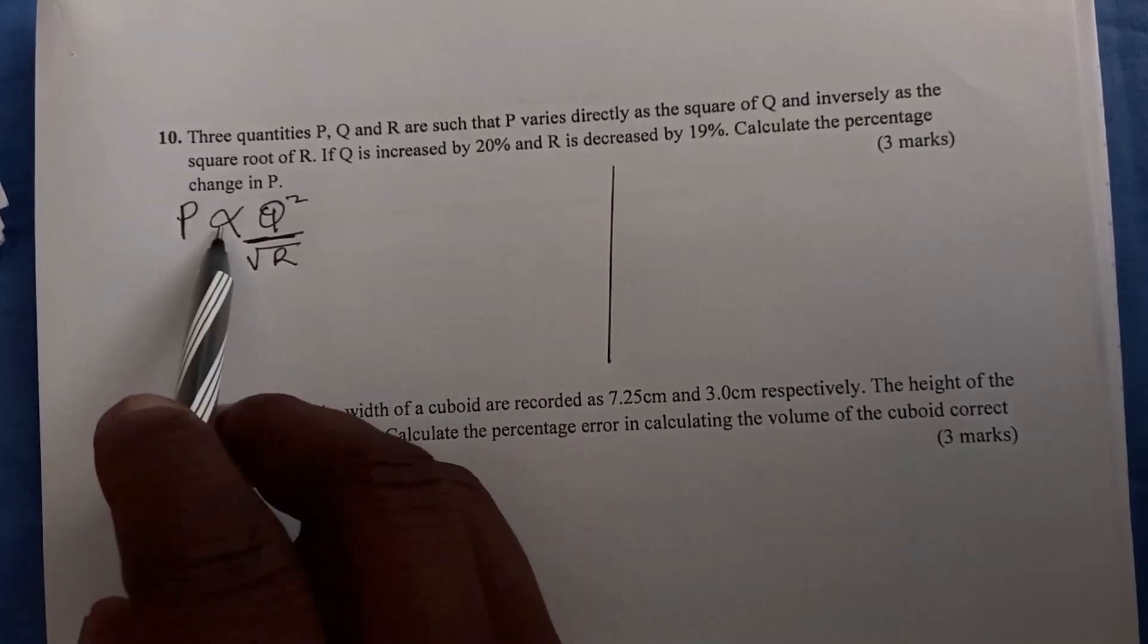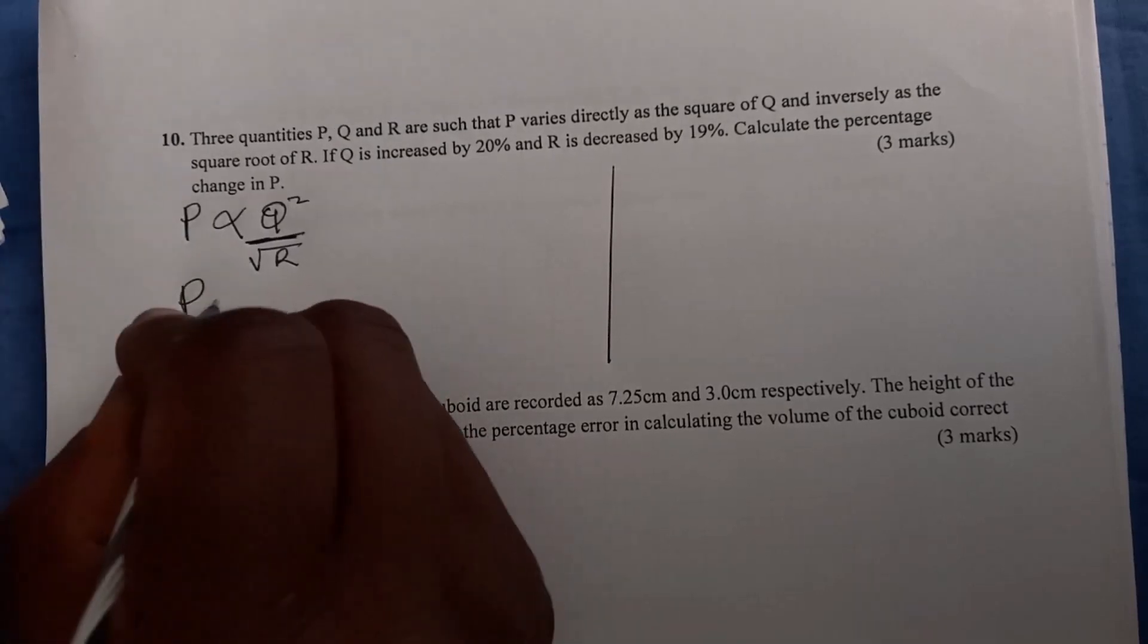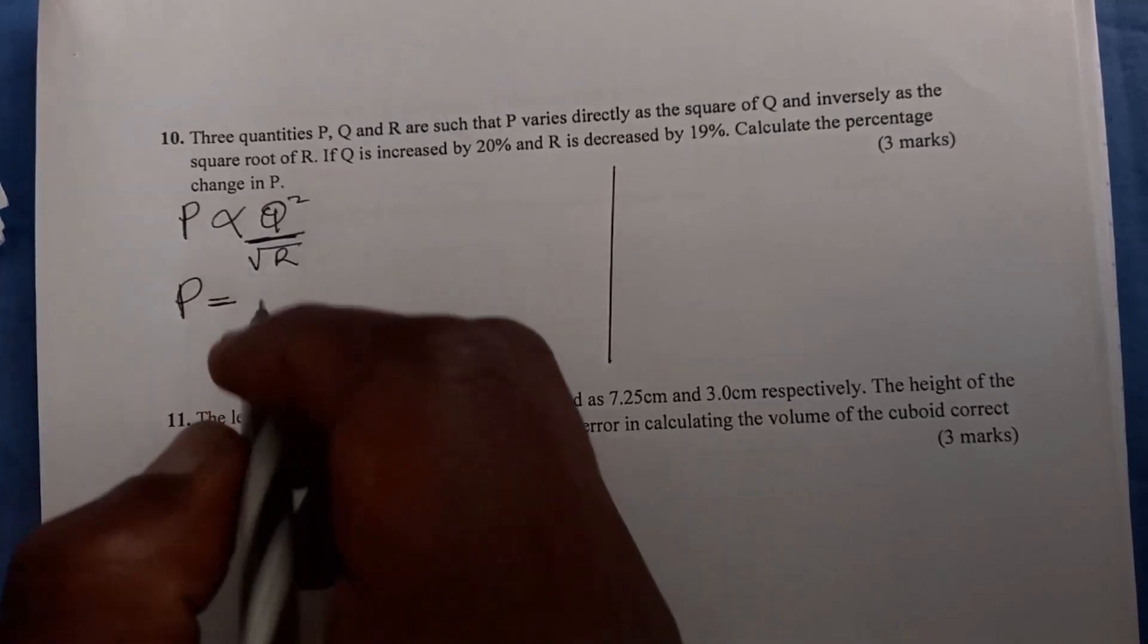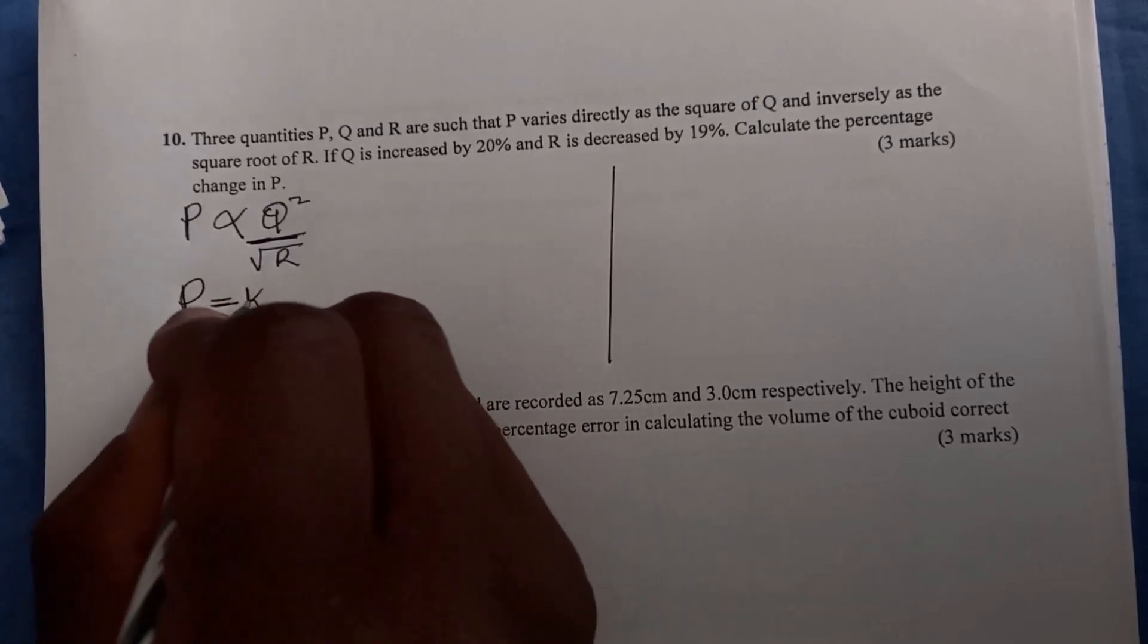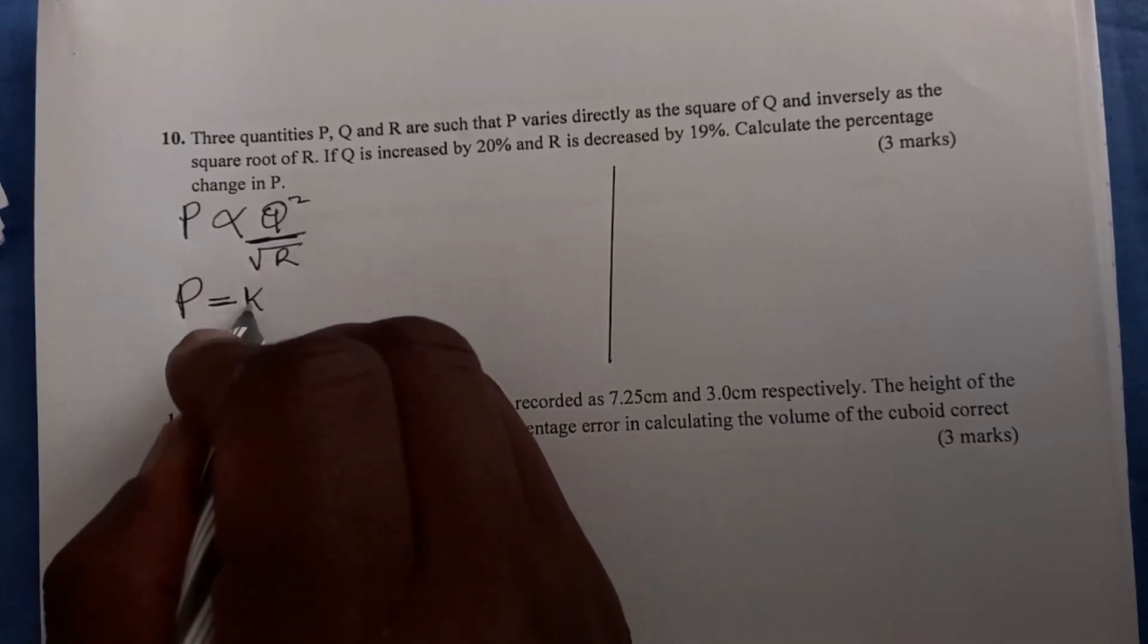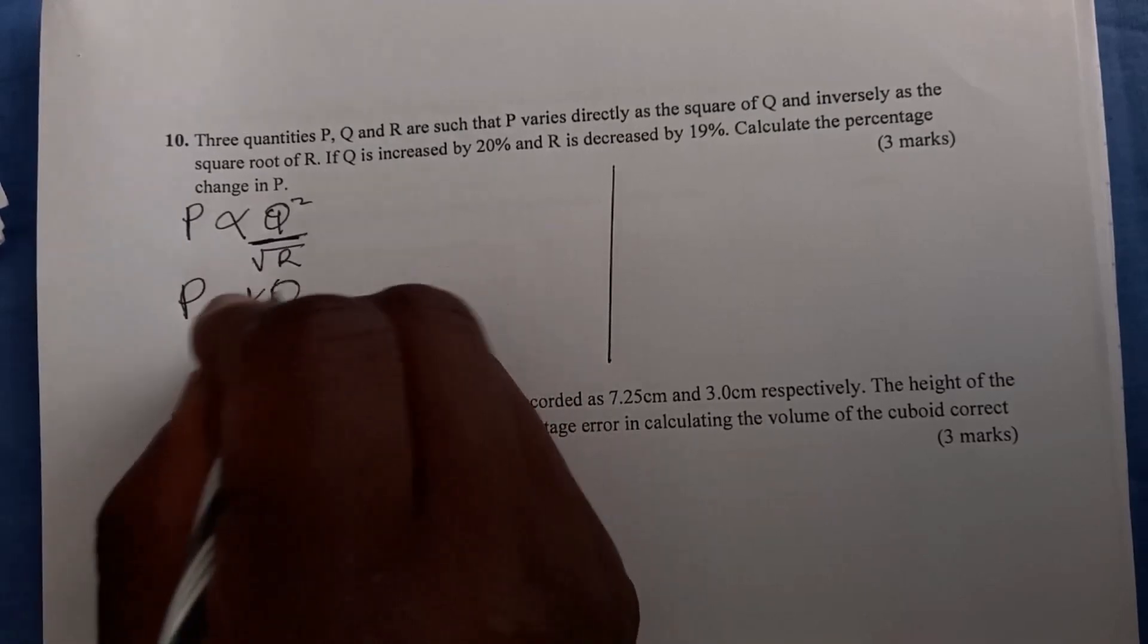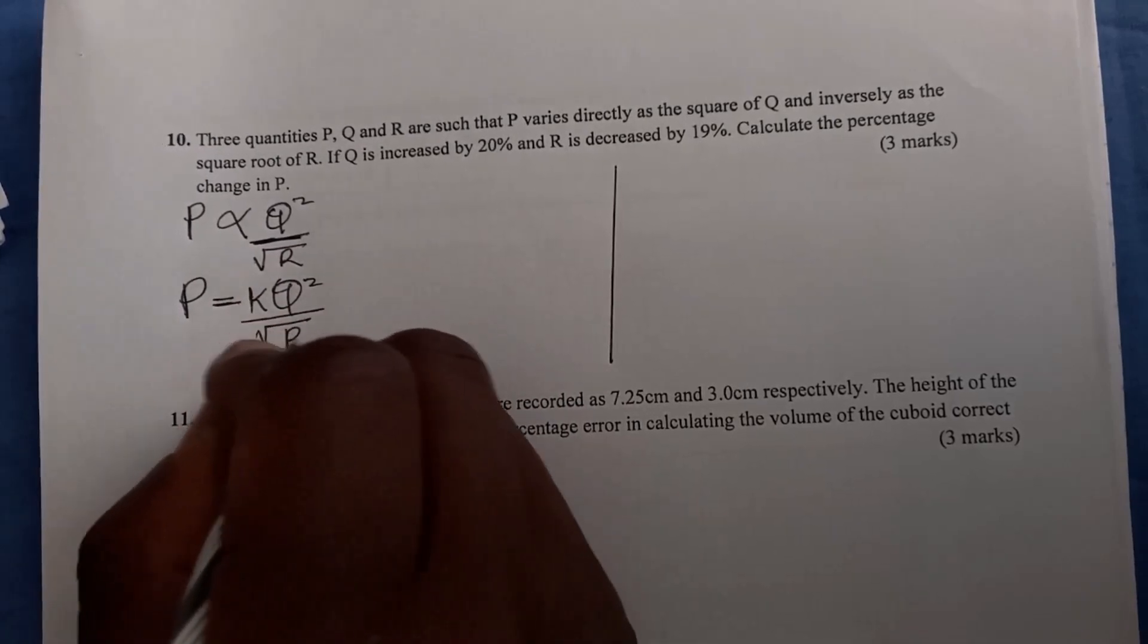When you remove the sign of proportionality, you replace it with an equal sign, and when you do that, you must introduce a constant of proportionality. The constant will be K, so now you have P equals K times Q squared divided by the root of R.